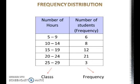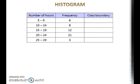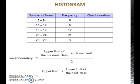Let's look at how to draw a histogram. To draw a histogram, we must first find the class boundary for each class. Each class has two boundaries called the lower boundary and the upper boundary. The lower boundary of a class is found by adding the upper limit of the previous class to the lower limit of that particular class and dividing by 2. The upper boundary is found by adding the upper limit of that particular class to the lower limit of the next class and dividing by 2.